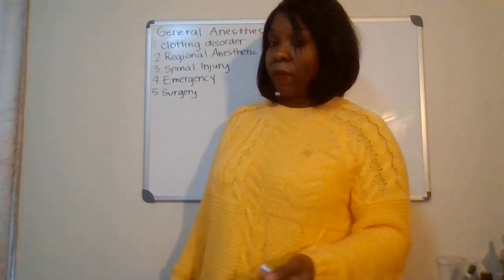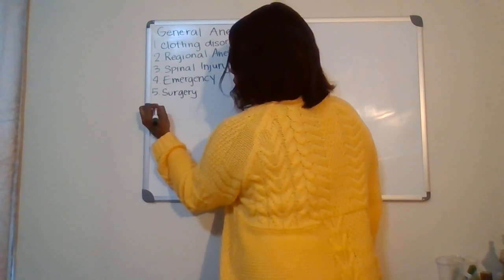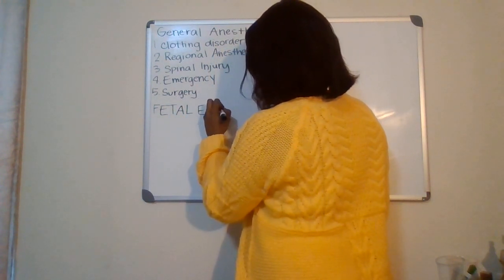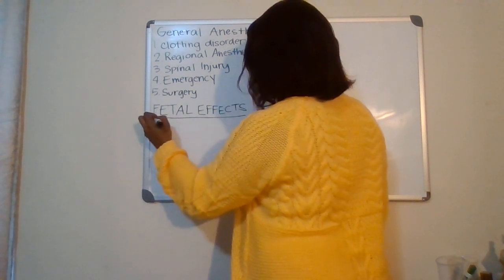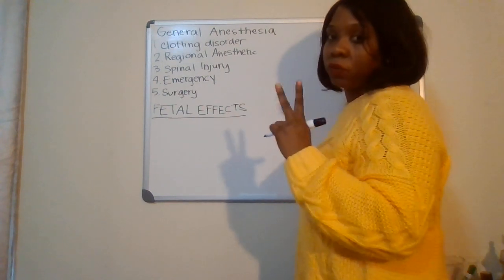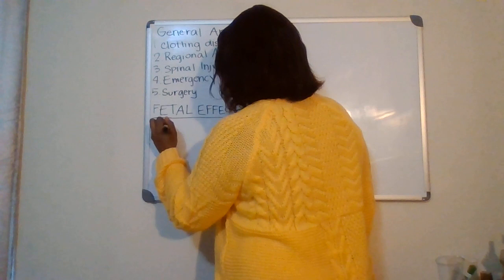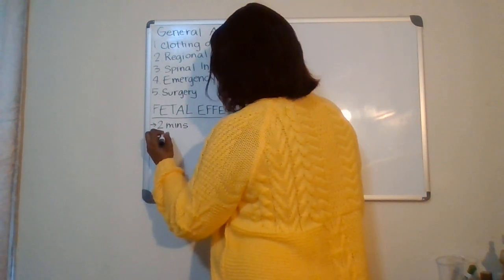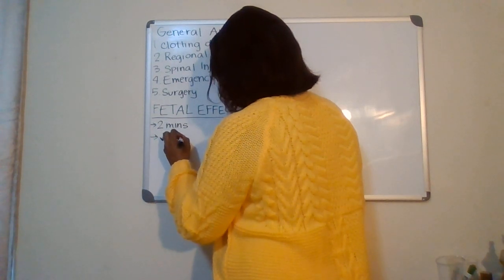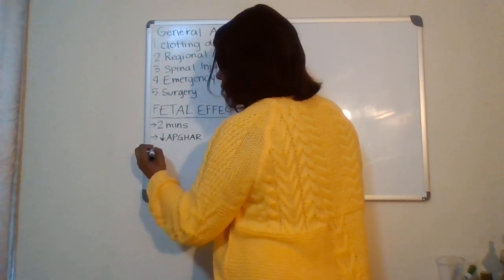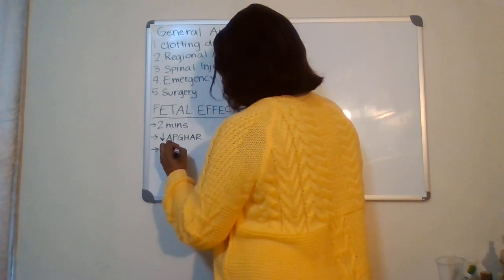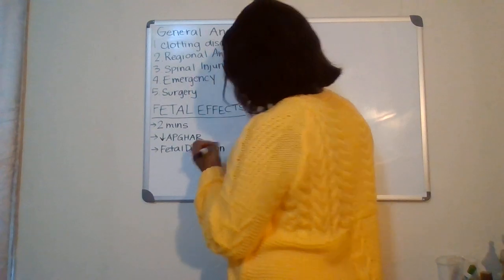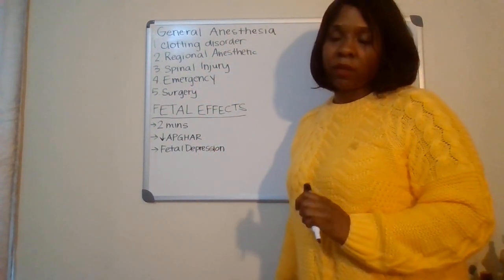Now what's going to happen to the baby? Let's talk about fetal effects. Keep in mind that the general anesthetic reaches the baby in two minutes — very quickly. What's going to happen to the baby is that the baby is going to have a low APGAR score and fetal depression. You want to make sure the mom knows what's going to happen.